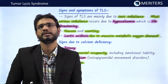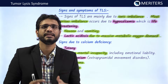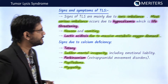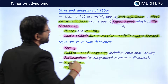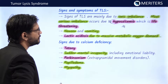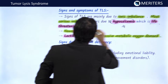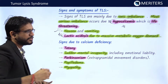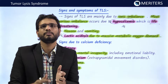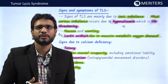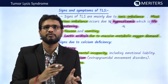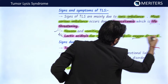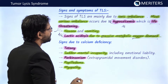When it comes to signs and symptoms of tumor lysis syndrome, we focus on ionic imbalances — particularly hypocalcemia, which is life-threatening. Most symptoms will be due to hypocalcemia. There can also be nausea, vomiting, and lactic acidosis. Lactic acidosis occurs because the change in homeostasis increases the metabolic demand for oxygen, leading to lactic acidosis due to massive metabolic oxygen demand.